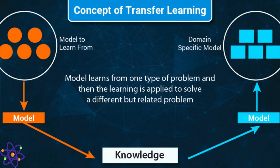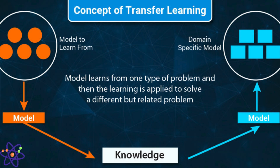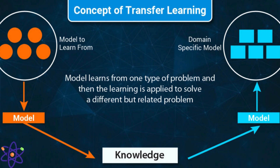Transfer learning is a machine learning technique where a model trained on one task is repurposed for a second related task. In deep learning, transfer learning involves using a pre-trained neural network as the starting point for a new but related task. Instead of training from scratch, which may require large amounts of labeled data and computational resources, transfer learning leverages knowledge from a source task to improve performance on a target task. Key concepts include pre-trained models, source and target tasks, fine-tuning, feature extraction, domain adaptation, and freezing layers.